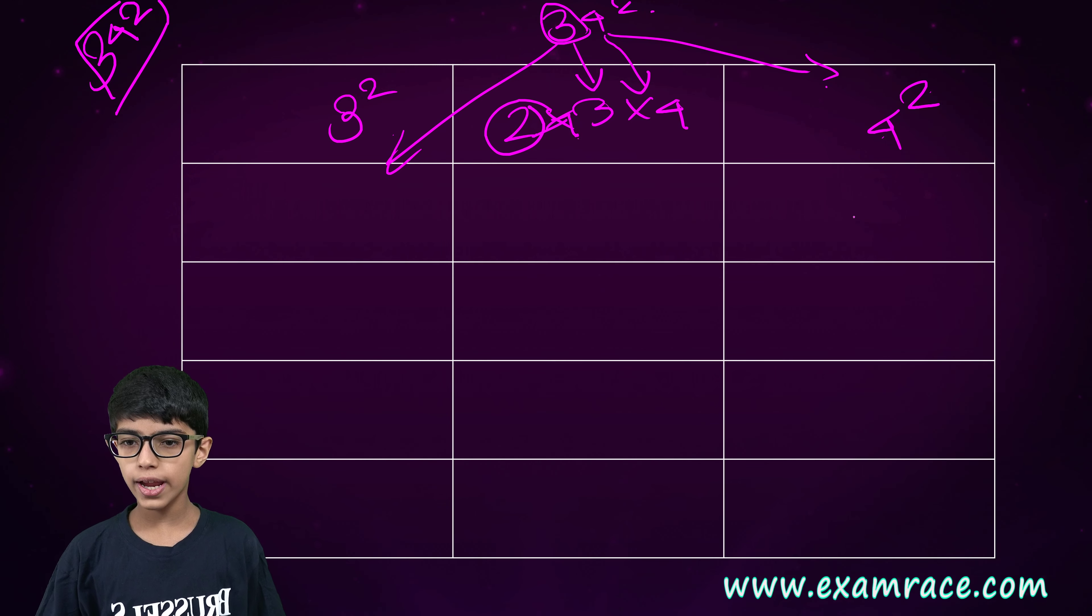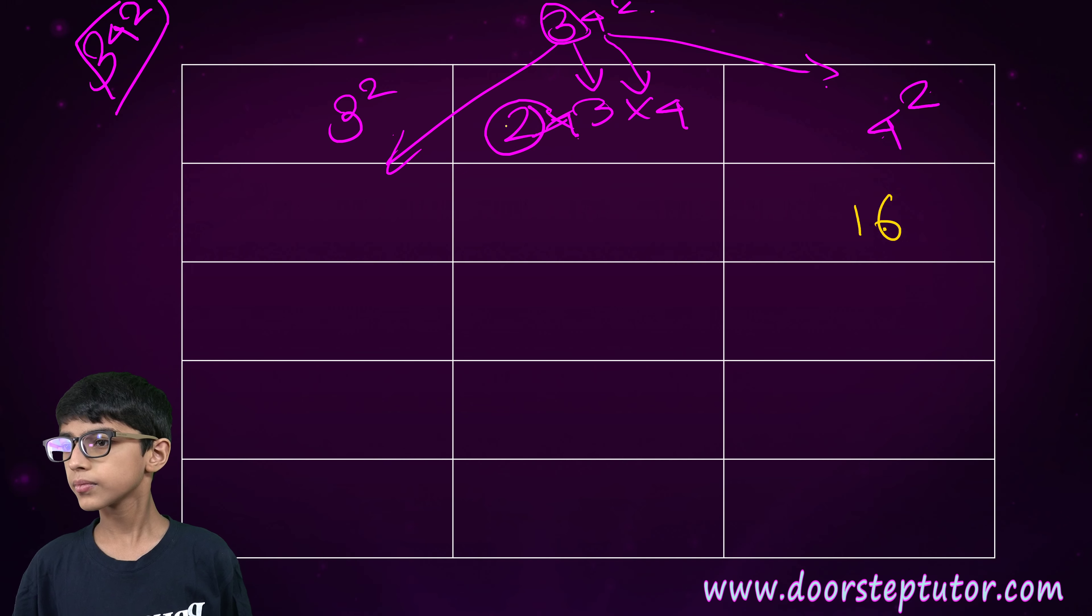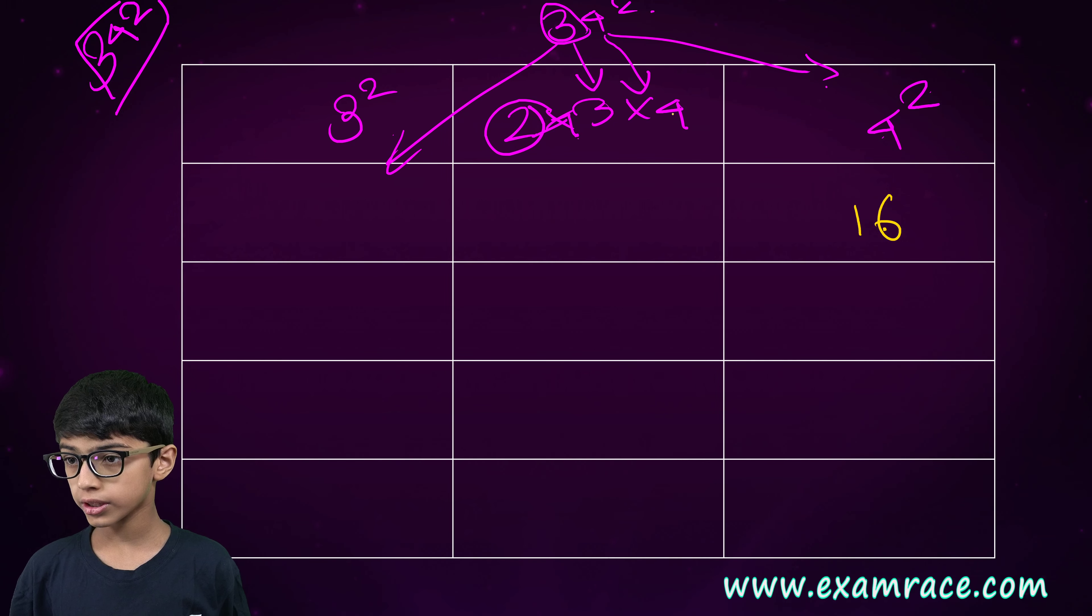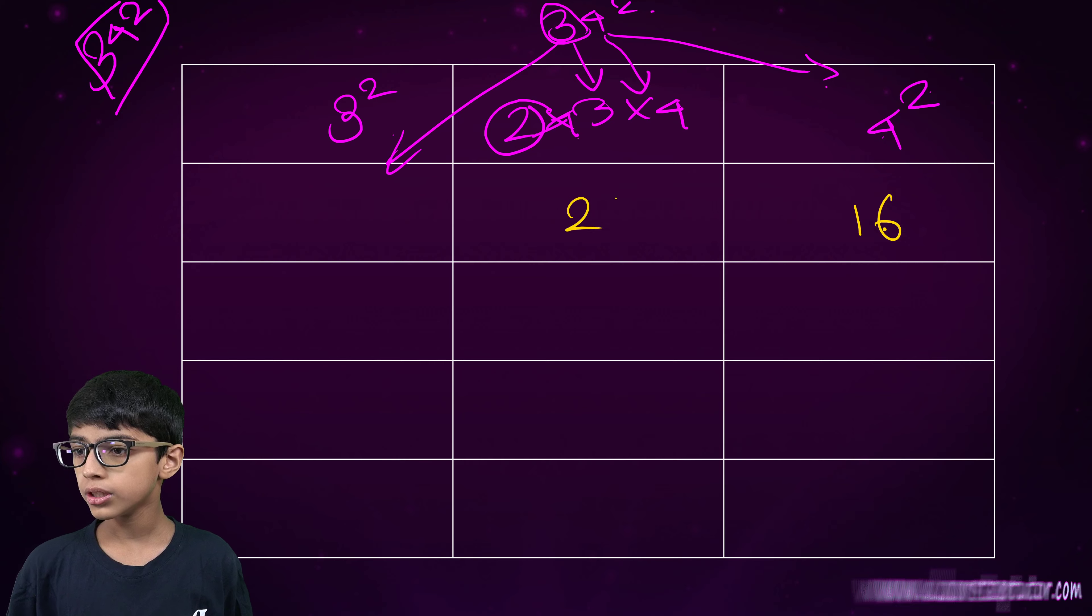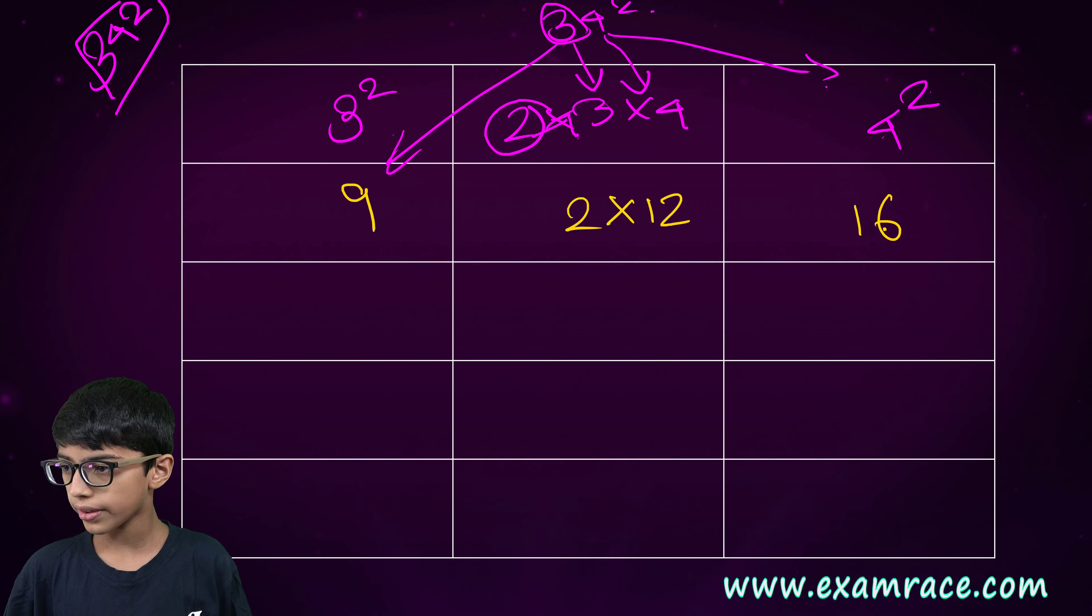Four square, we know it is 16. Two into three into four. Three into four is twelve. Two into twelve. And here, three square that is nine.